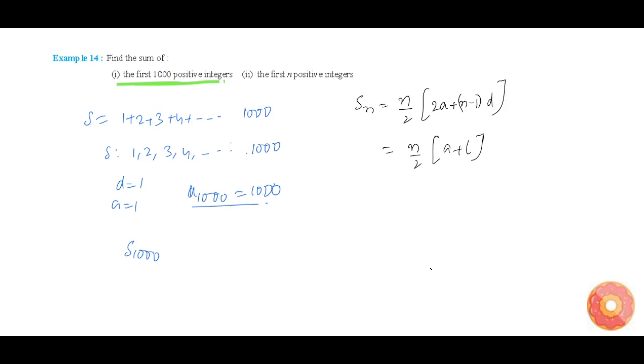Now S₁₀₀₀ equals n (n is 1000) into 1000 by 2 into a plus l (l is 1000, a is 1), which can be written as 500 into 1001, which equals 500500. This is our solution.